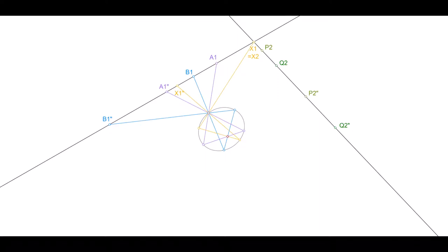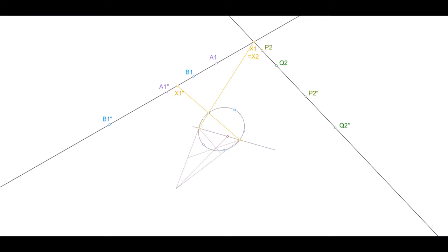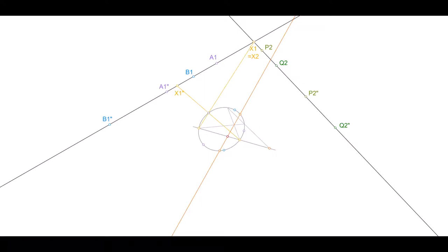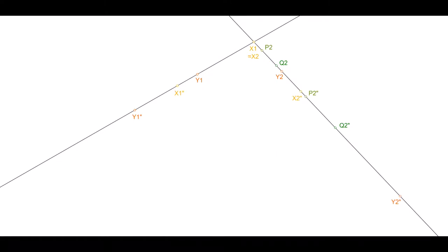Use this center to project the intersection X of the two involutions. With respect to its perspective and projective images on the Steiner circle, find the harmonic conjugate of the center of involution. Find the intersections of its polar with the Steiner circle. These give a pair Y and Y'' in the involution, separating X and X'' harmonically. Repeat the procedure with the other involution. Now you have a harmonic range of each involution, both proceeding from X.